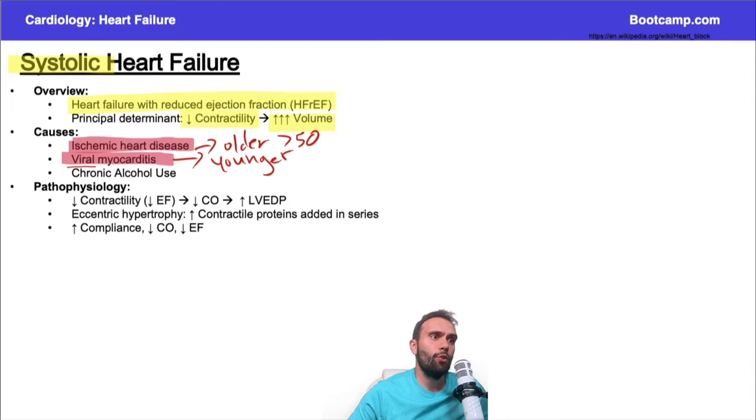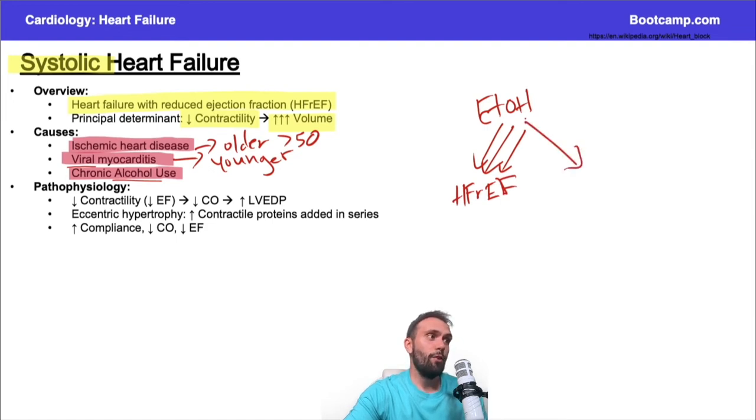The other last one is chronic alcohol use. When you're thinking alcohol use, if they have a patient that has Wernicke's encephalopathy, those are patients that are very classic for systolic heart failure, but just be careful. This is where I want you to be careful, because if you have a patient that has alcohol use, normally we're going to draw three arrows here. Most of the time, they're going to be giving you a systolic heart failure, heart failure with reduced ejection fraction.